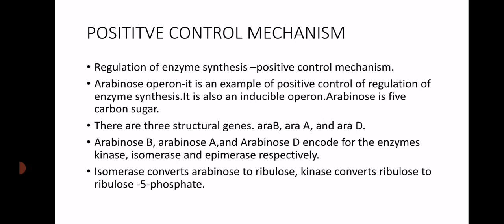There are three structural genes in the arabinose operon, denoted araB, araA, and araD. AraB, araA, and araD encode for the enzymes kinase, isomerase, and epimerase respectively. That means araB is for kinase, araA is for isomerase, and araD is for epimerase.